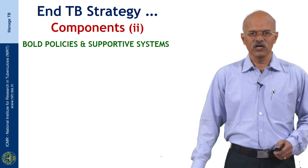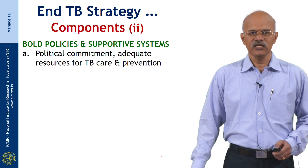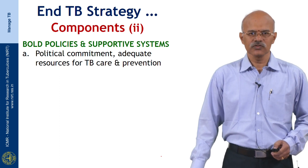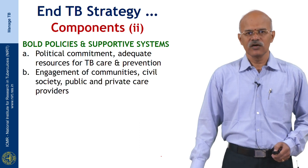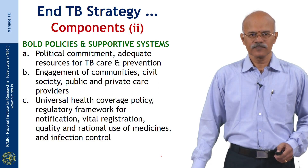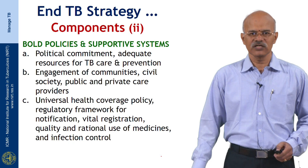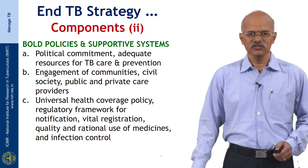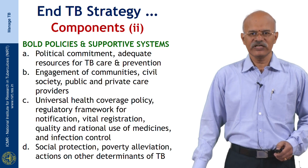For the bold policies and supportive systems pillar, there should be a high level of political commitment with adequate resources for TB care and prevention. There should be engagement of communities, civil societies, and public and private care providers in the TB control program. There should be a universal health coverage policy, regulatory framework for notification, vital registration, quality and rational use of medicines, infection control, social protection, poverty alleviation, and actions on other determinants of TB.